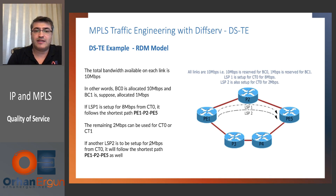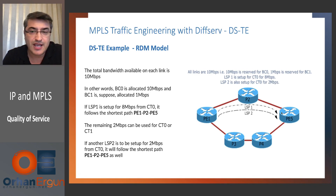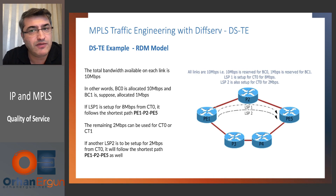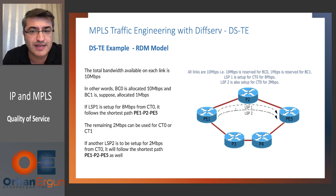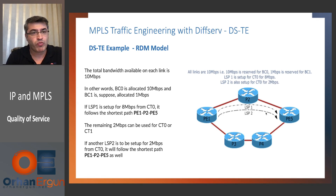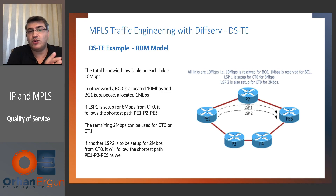If another LSP2 is to be set up for 2 MB from CT0, it will also follow the shortest path. This is the difference from MAM. In MAM we said 9 MB for CT0 and 1 MB for CT1, so when 8 MB was signaled for CT0 we couldn't use that remaining 2 MB for CT0. But this time we can use the top path for that 2 MB CT0 because BC0 is allocated 10 MB, covering both CT0 and CT1.